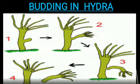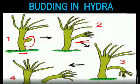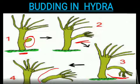Next is budding in Hydra. Hydra is multicellular. Some regenerative cells produce a bud which gradually matures, growing exactly like the parent. Finally, the bud detaches from the parent body and results in a new Hydra.